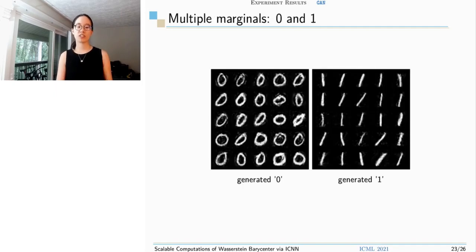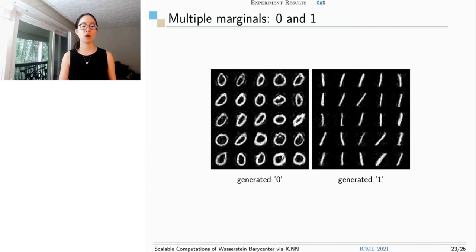As for multiple marginals, we can take a look at this 0-1 digit example. After one training, we recover digits 0 and 1 well. This is wonderful because normally GAN sets only one distribution as a learning target and can only recover one distribution after training. But we can learn multiple distributions after a single training process.